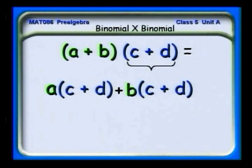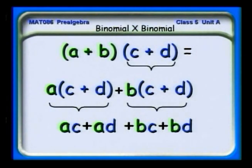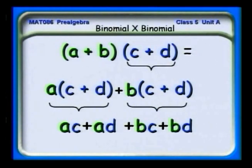Next, we use the distributive law again with a times (c + d) and b times (c + d). When we expand a(c + d), we get ac + ad. Then b(c + d) gives bc + bd. We link them with the same plus or minus sign. So we wind up with four terms — all of the terms on the left, a and b, multiplied by all of the terms on the right.